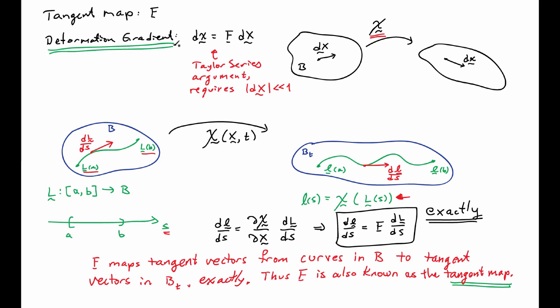The two names emphasize different aspects of what the tensor F does. Deformation gradient has its physical interpretation of mapping small line segments of material from the reference to current configuration. The tangent map name is associated with this exact relationship: F moves a vector tangent to a curve in the reference configuration to the tangent of that same mapped curve in the current configuration.